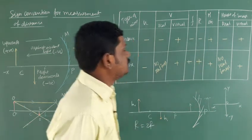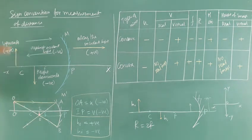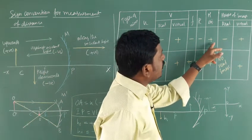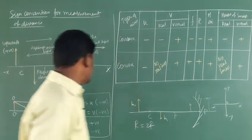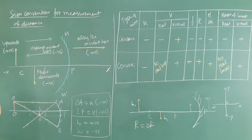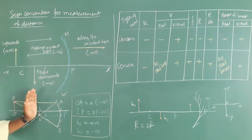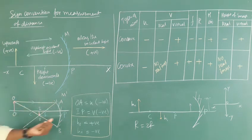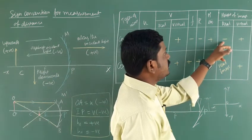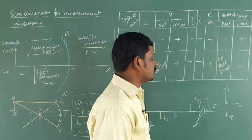The height of the object is always positive because the object is placed above the principal axis. For the first four cases, the image is formed below the principal axis and on the left-hand side of the mirror, so the height of the image is negative when the image is real. If the image is virtual, it is formed behind the mirror, so it is positive — along the direction of light.